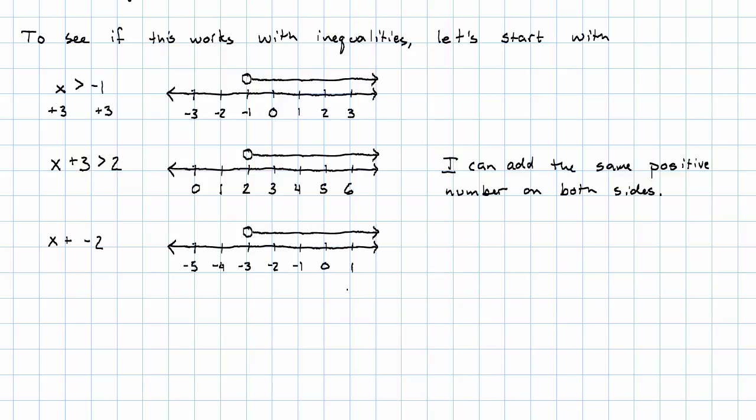What happened? I see that x plus negative 2 is greater than negative 3. What's happened here? I've added negative 2 to both sides. I conclude that I can add the same negative number on both sides. Okay, so far so good. What about multiplying?